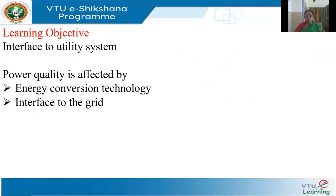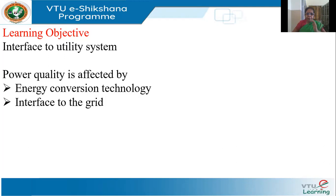The power quality at the point of interconnection of DG to the utility depends mainly on the energy conversion technology — how we are converting any form of energy to electrical energy. We have seen different DG technologies, starting from solar, wind, engines, and fuel cells. The second factor is how we interface the output of the DG to the grid. These two parameters affect the power quality at the point of interconnection.